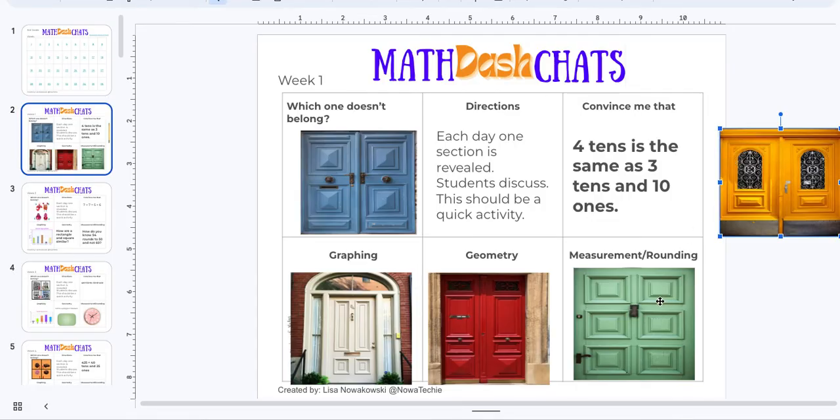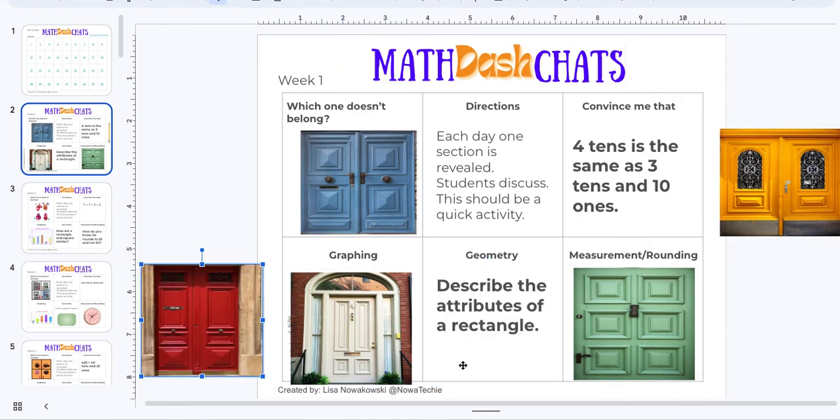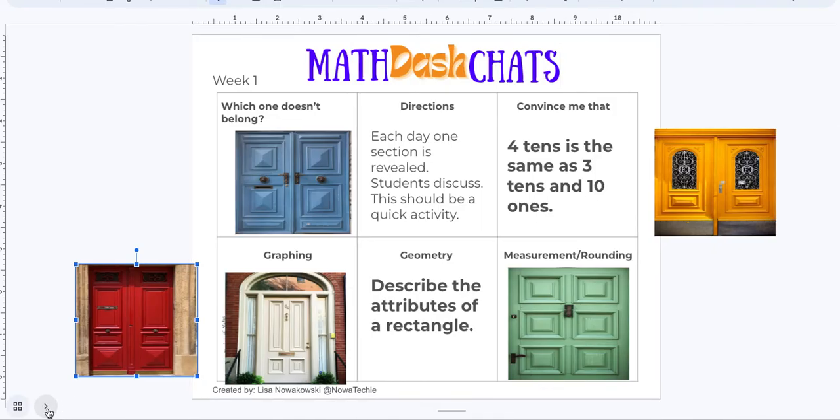And then this just happens every day. So maybe the next day they choose the red one. And so the red door gets moved aside and you can see that they have to describe the attributes of a rectangle. So again, this doesn't take very long. You can get rid of this side panel here by this little arrow right here. And it kind of streamlines it a little bit.